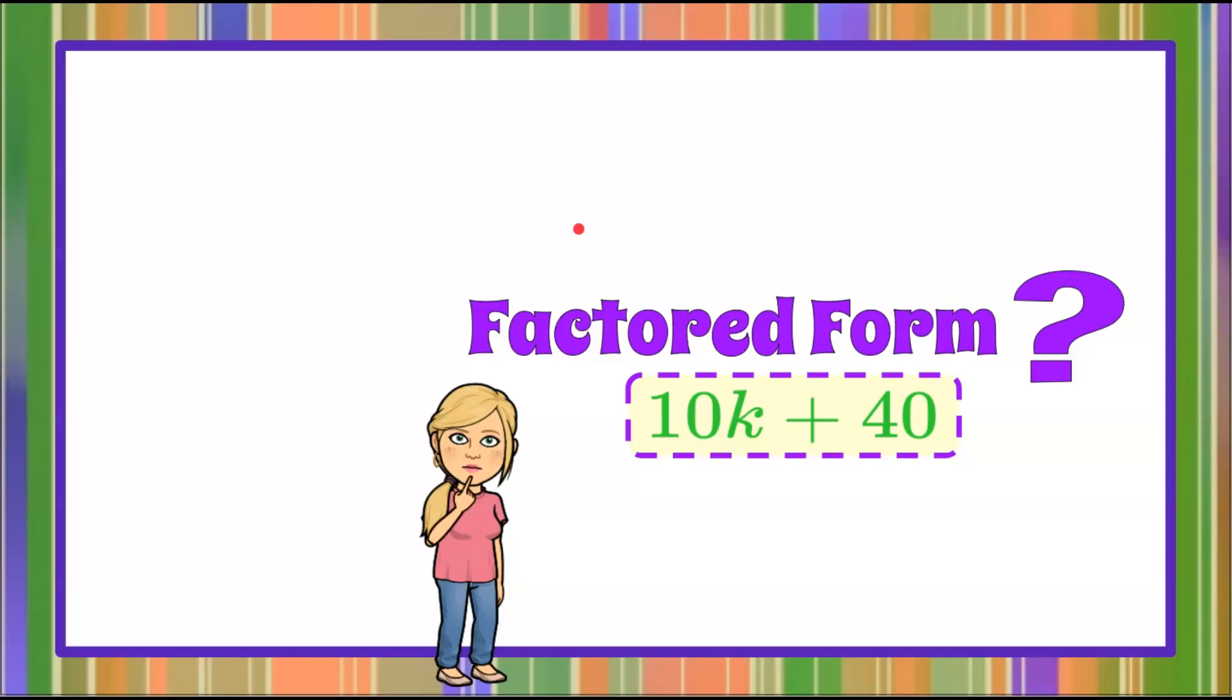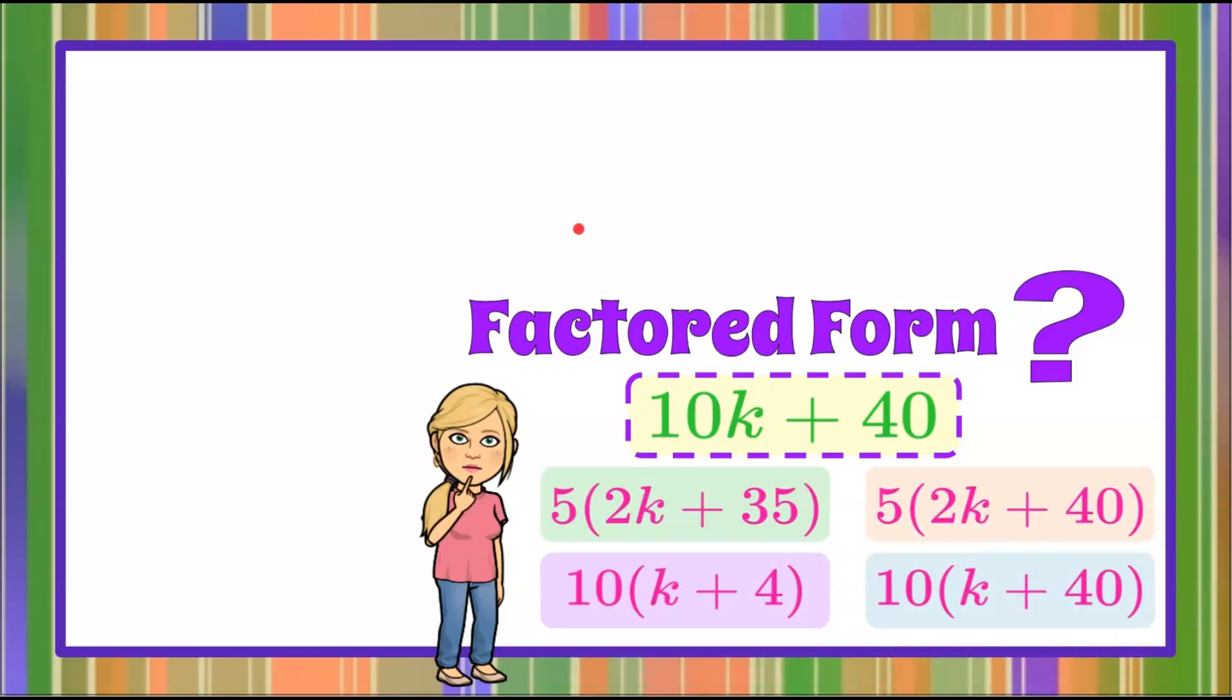And there you have it. That is factored form for 10k plus 40, a variable term and a constant term factored.